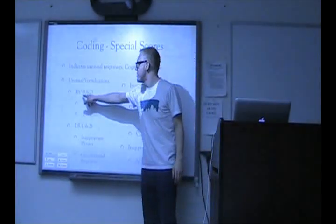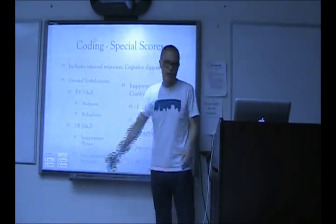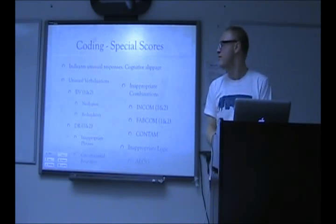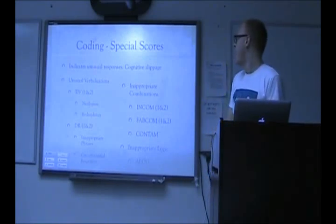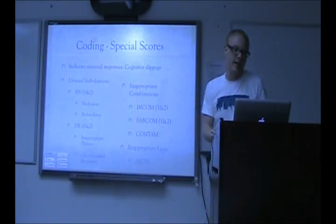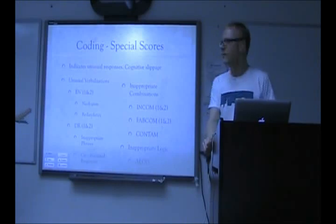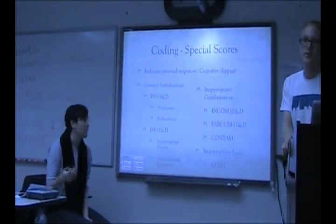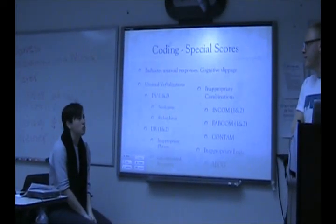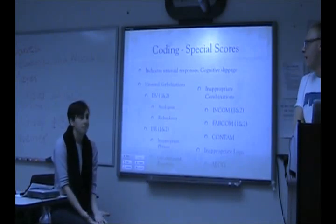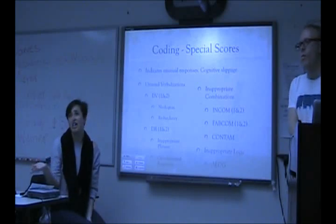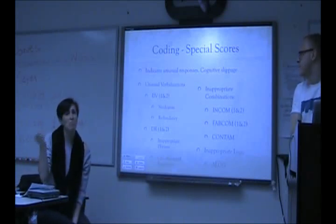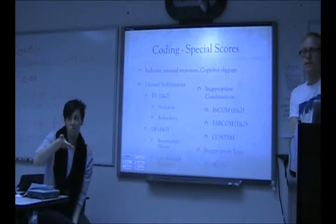There are deviant verbalizations, which will be DV, and there are two types. Neologism means that word does not exist — if they use a word that does not exist, like 'squish' or 'swoosh.' Also redundancy — when they say things like 'a pair of two.' An example of a DV1 redundancy is 'a tiny little puppy' — tiny and little meaning the same thing. Whereas a DV2 listed in the book is 'two twin lips of a vagina,' which sounds much more bizarre than 'a tiny little.' To a certain extent it's really a judgment call — it's how bizarre what they're saying sounds in terms of whether it's a one or a two.